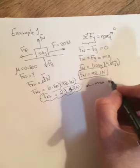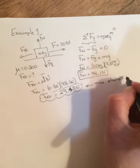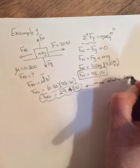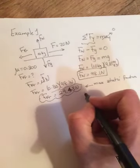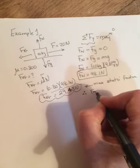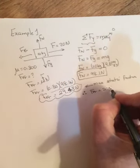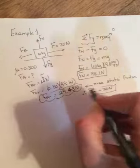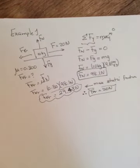But in this particular case, the static friction that would be acting on this box would be 20 newtons, just enough to keep it from moving because I'm pushing at 20. So that's the final answer.